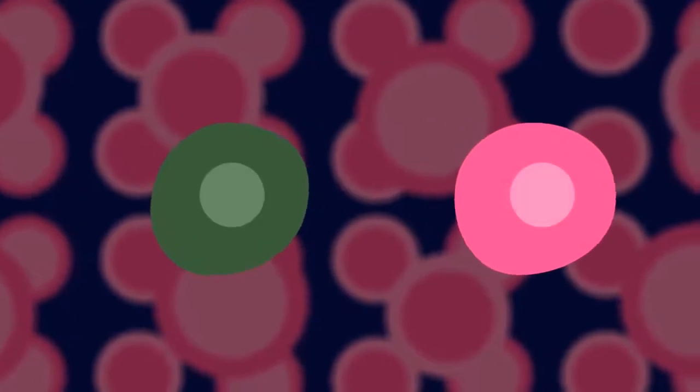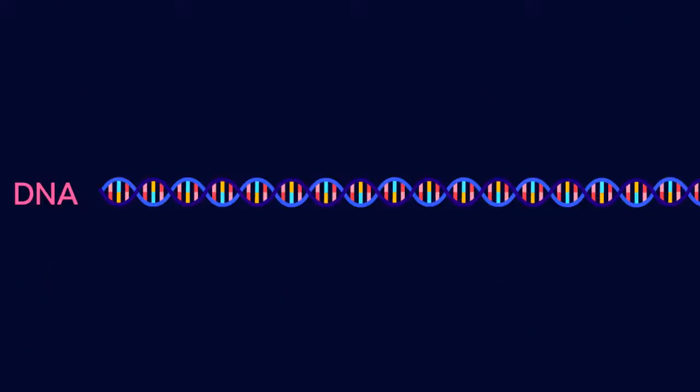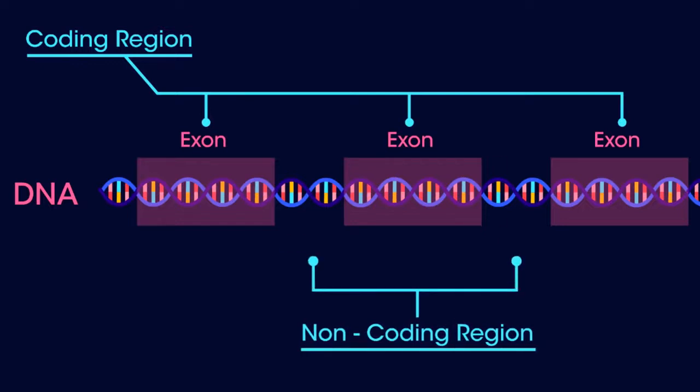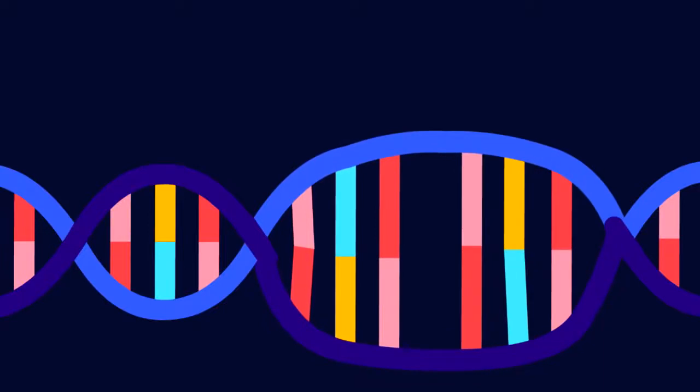When cells divide by mitosis, the DNA is replicated and sometimes mistakes are made. These are called mutations. Lots of mutations are silent - they have no effect on the cell because they occur in non-coding regions of the DNA. But sometimes mutations in certain genes may mean that too many proteins are produced that trigger the cell to divide, or proteins that normally tell the cell to stop dividing may not be produced. The cell then starts to grow out of control.